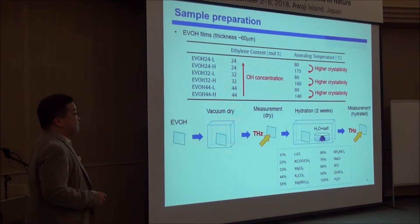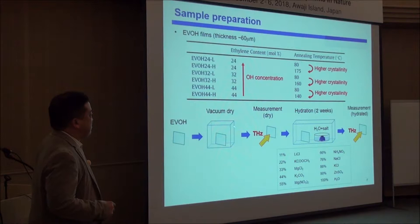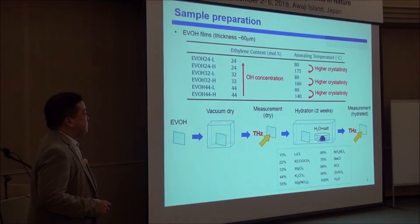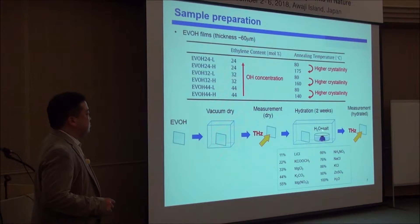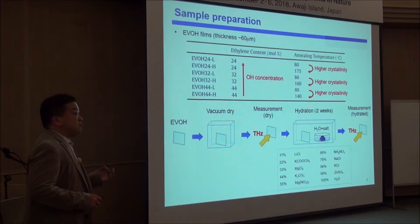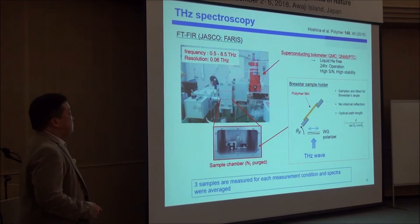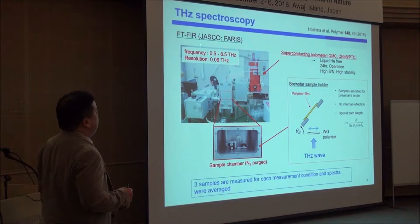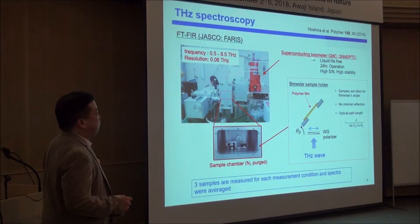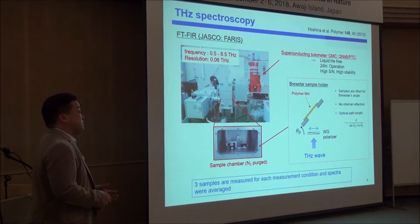We hydrated the samples for two weeks in a chamber with H₂O and salt, then measured the hydrated samples. We can control the humidity by changing the salt, so we measured 10 different humidity conditions. For the measurement, we used a conventional FTIR spectrometer — just the same as others are using — but we have two special pieces of equipment.